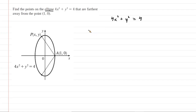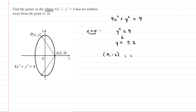We can let x equal 0. If we did that, we would have y squared equals 4. Solving that, we get y is equal to plus or minus 2. So our ellipse contains two points: (0, negative 2) and (0, positive 2). The point (0, negative 2) would be down there, and (0, positive 2) would be up there.